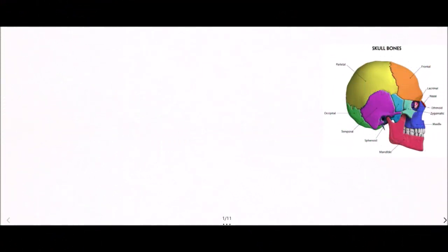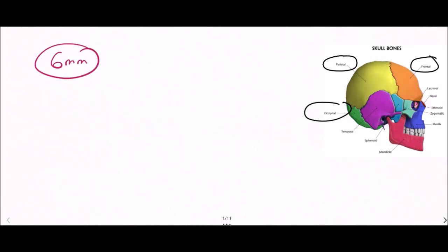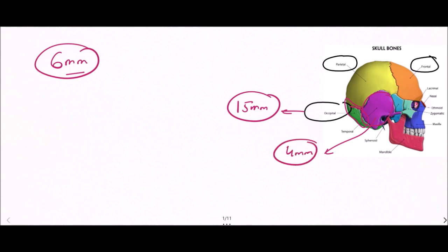In the skull there are different bones: we have the frontal bone, the parietal bone, the occipital bone, and the temporal and sphenoid bones. The average thickness of skull bone is approximately 6 mm. The thickest bone of the skull is the occipital bone, with a thickness of approximately 15 mm. The thinnest bone is the temporal bone, with a thickness of 4 mm. The frontal and parietal bones have a thickness between 7 to 8 mm.